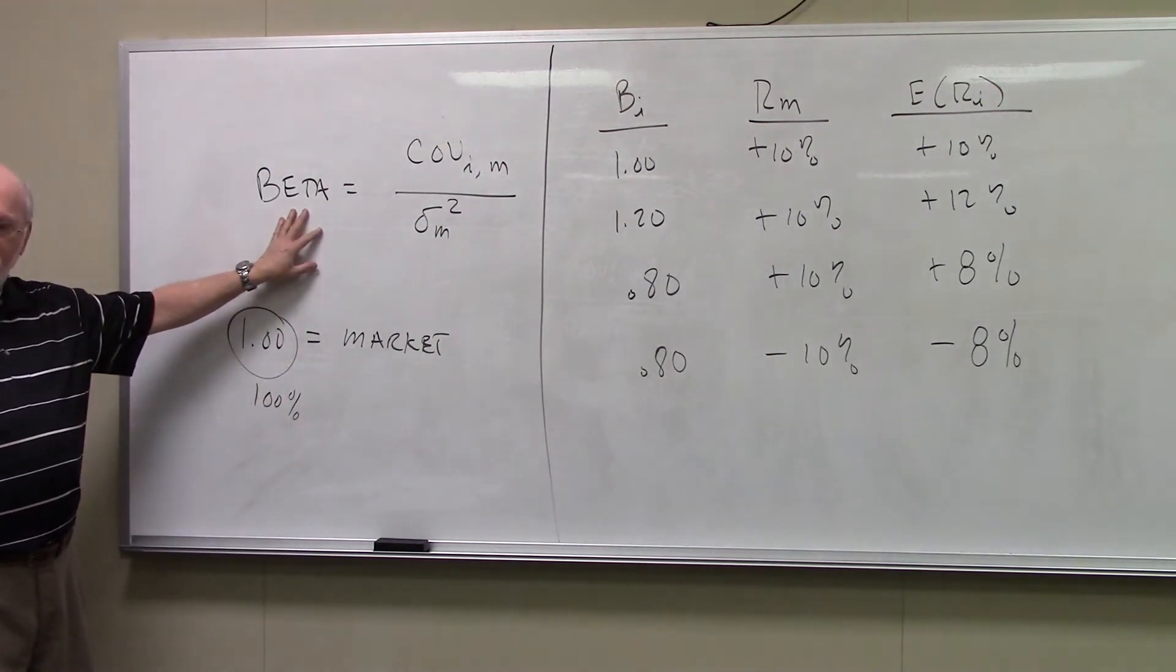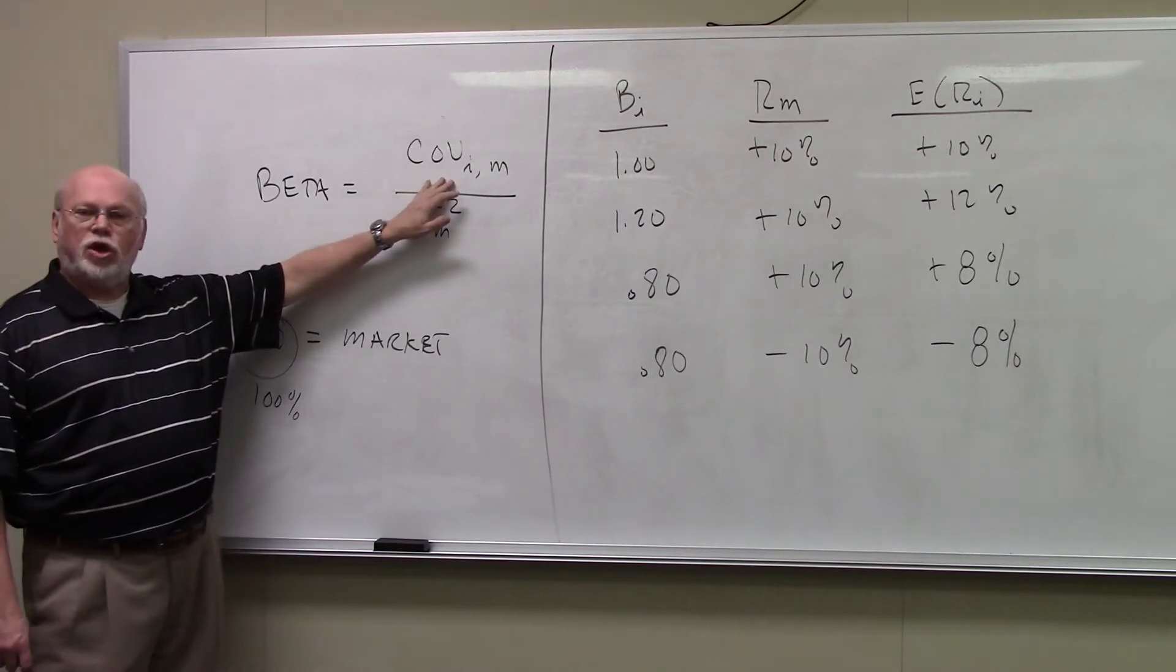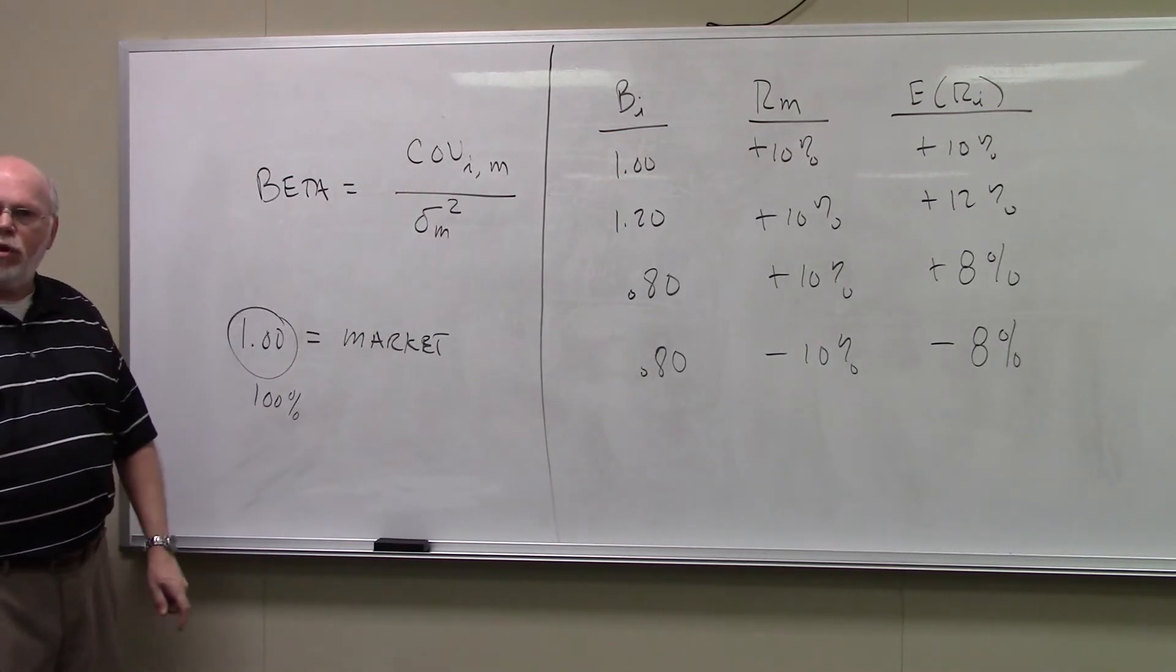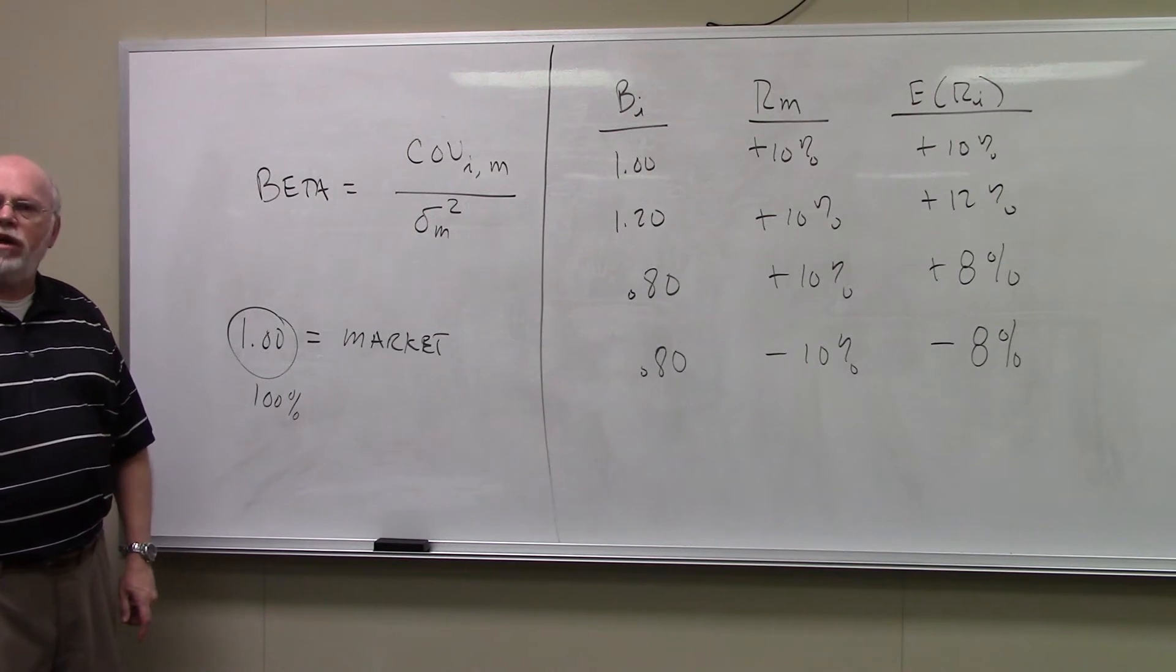Now the beta statistic itself, the way you calculate beta, the formula for beta: Beta is defined as the covariance between the stock and the market divided by the variance of the market. That gives you the beta statistic.